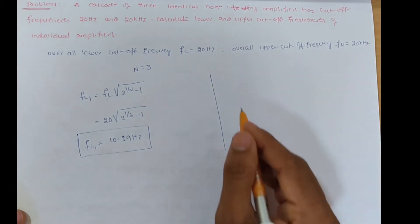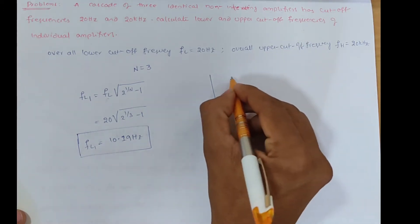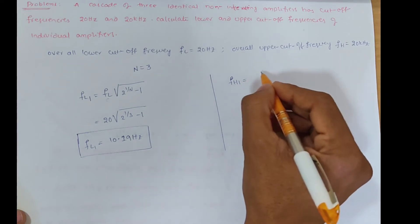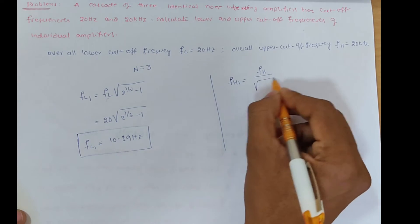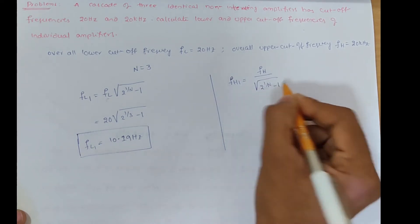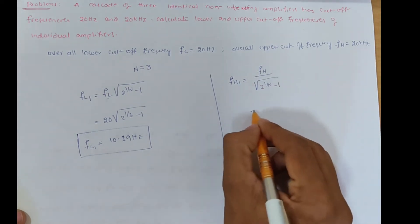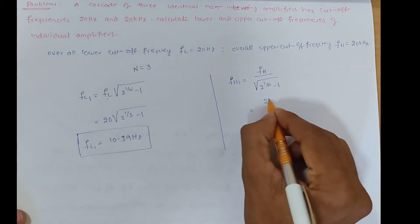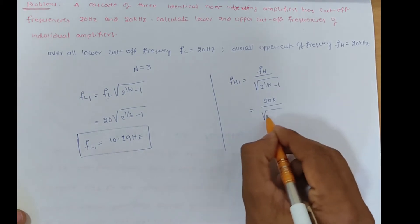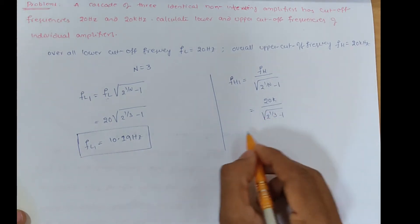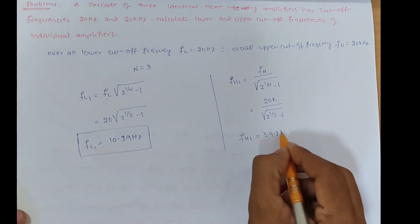Similarly, we calculate the individual amplifier upper cutoff frequency, FH1. FH1 = FH ÷ √(2^(1/n) − 1), where FH1 is the overall upper cutoff frequency of one stage. Substituting: FH = 20 kHz, so FH1 = 20 kHz ÷ √(2^(1/3) − 1). We get approximately FH1 = 39.2 kHz.